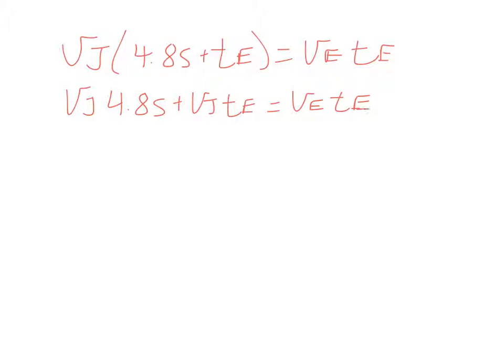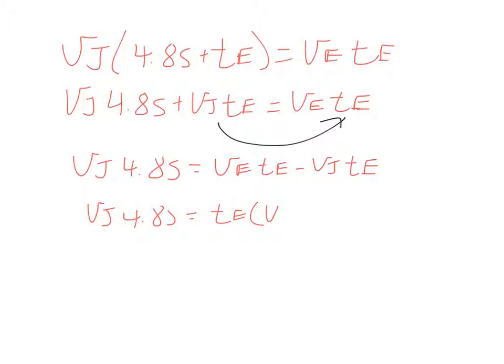I want to get what I'm solving for isolated, so I'm going to bring this over here. VJ 4.8 seconds equals VE TE minus VJ TE. Factoring out the TE on the right hand side, VJ 4.8 seconds equals TE times VE minus VJ. And then again, just isolating the TE, I'm going to divide both sides by what's in parentheses. VJ 4.8 seconds divided by VE minus VJ equals TE.